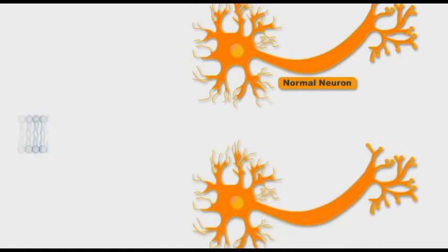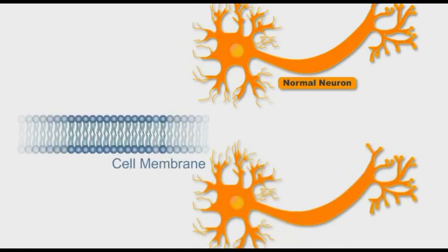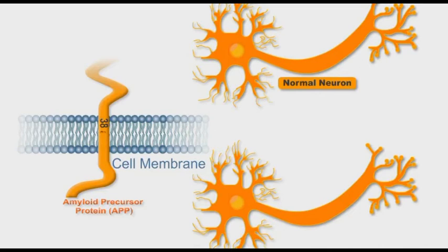In the healthy brain, there is a natural protein that crosses the nerve cell membranes. It is called amyloid precursor protein or APP.